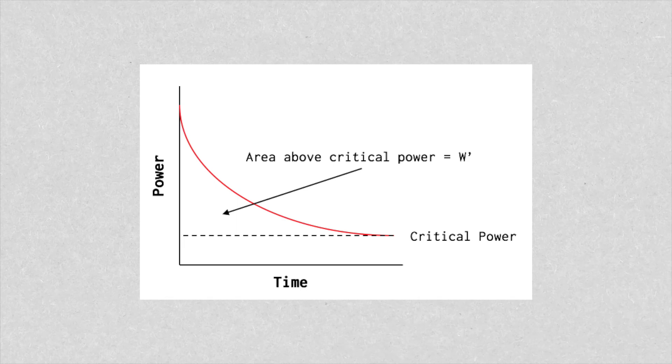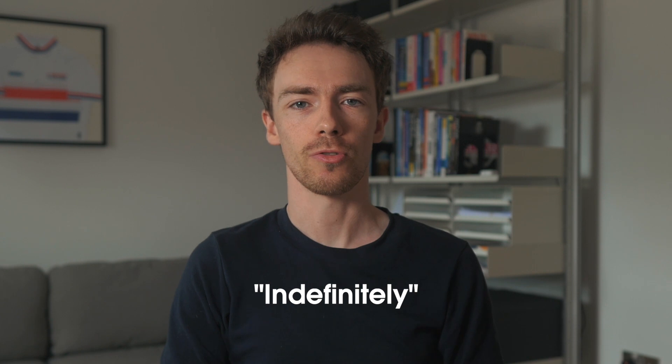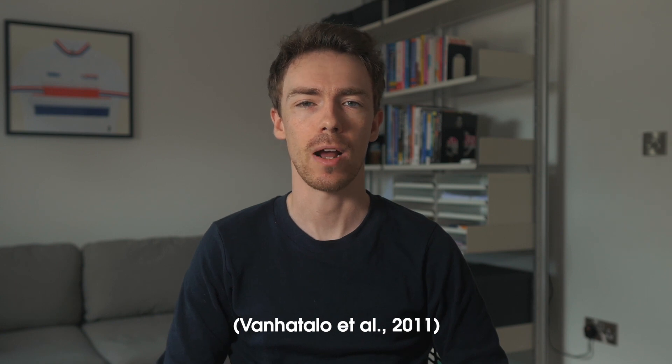Critical power derives from the concept that the power-duration relationship above a certain level follows a well-defined hyperbolic curve. This curve can be defined by two distinct parameters: critical power and W'. Critical power is the power output you'll trend towards when riding at high intensity as exercise duration is increased indefinitely. That's a mathematical construct of course, which is why this model fails to hold at or below critical power. In practice cyclists can typically only sustain power outputs at critical power for around 30 minutes, though there are inter-individual differences.